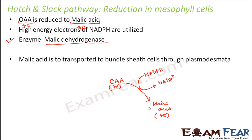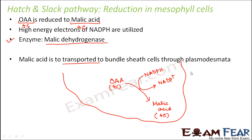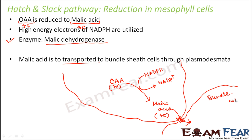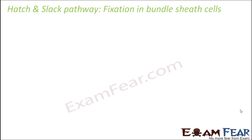The malic acid is produced in the mesophyll cells and is then transported to the bundle sheath cells through the plasmodesmata. The bundle sheath cell is the one which has the Rubisco enzyme, so the Calvin cycle can take place there.